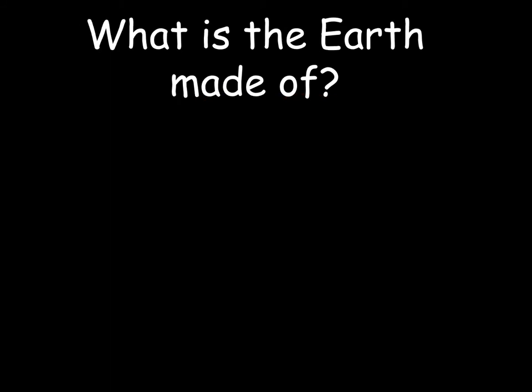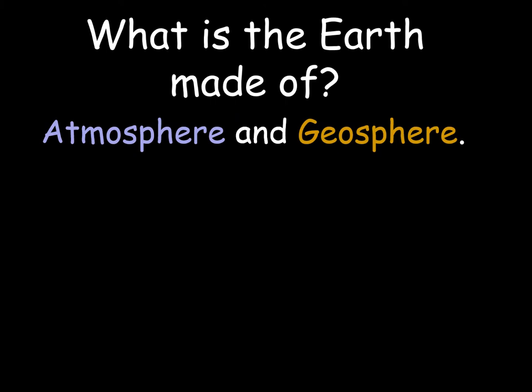What is the earth made of? We're going to look at two parts. The geosphere is essentially all of the solid bits of the earth, and the atmosphere is the gases that surround it. There's also the hydrosphere, which is the water, and the biosphere, which is all of the living things — generally the terrestrial living things. We include the marine living things in the hydrosphere.